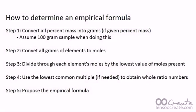Divide through each element's moles by the lowest value of moles present. So what I mean by that is once we find the moles of every element present, for instance carbon, oxygen, hydrogen, you're going to find out of those which one offers the lowest amount of moles, and you'll divide each number of moles for each element through by that lowest number.